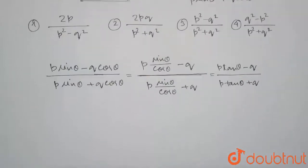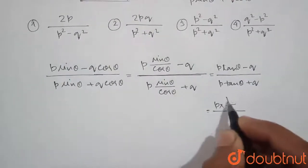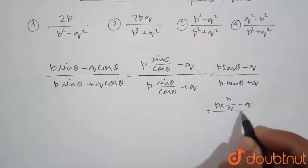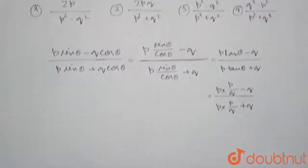So putting the value of tan theta in the given expression, we will get p into p by q minus q, p into p by q plus q.